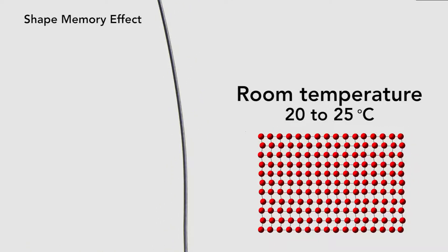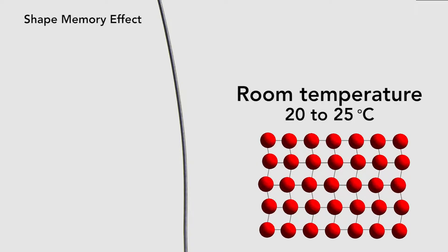And then as it returns to room temperature, the twin structure returns, the one with an equal number of both rhombuses.